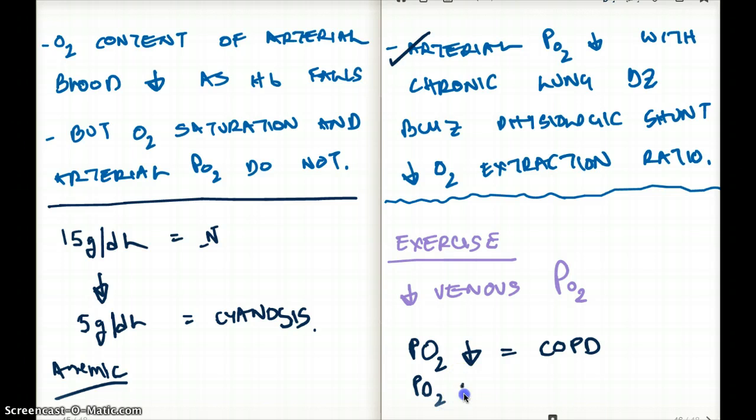Is it going to be the PO2 in the artery, PO2 in the vein, oxygen content in the vein, oxygen content in the artery? So for an exercising person, the most difference is seen in partial pressure of oxygen in the vein. The partial pressure of oxygen in the vein is going to be decreased. That's the most significant change for exercise.